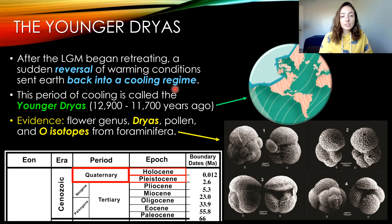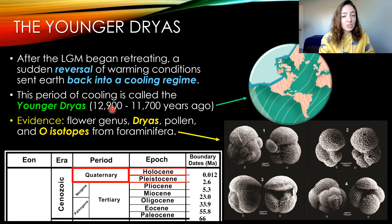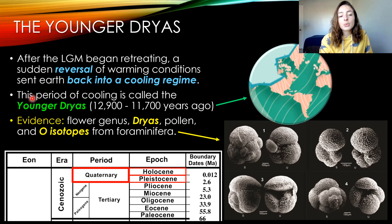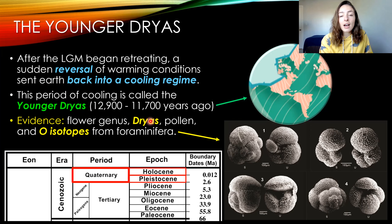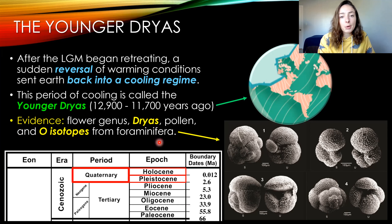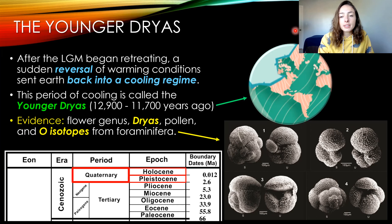This reversal occurred around 12,000 to 13,000 years ago, and this was the Younger Dryas. The Younger Dryas is named after the flower genus Dryas because a lot of the evidence for this glacial period comes from pollen of that genus. We also have oxygen isotope evidence from foraminifera, which are always really robust paleo-temperature proxies.